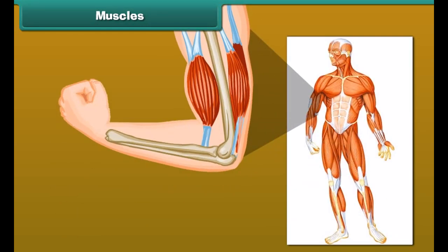Pivot joint: our neck allows us to turn our head on both sides. Have you ever thought about what makes this possible? This is possible because of the pivot joint.